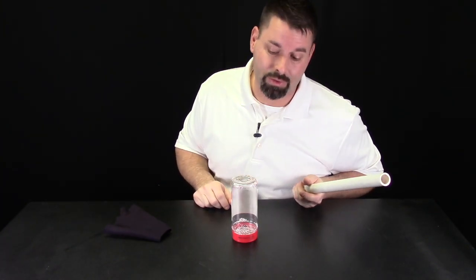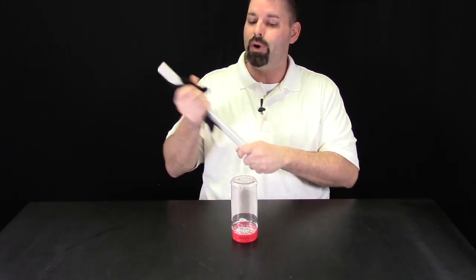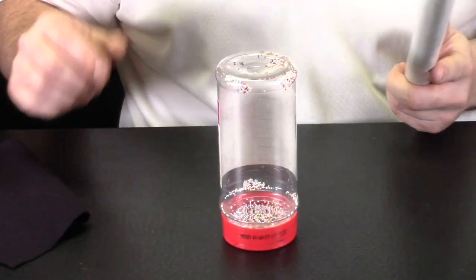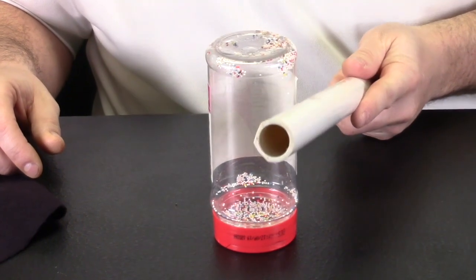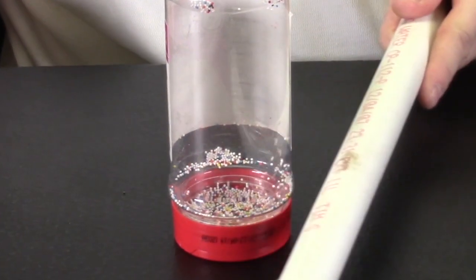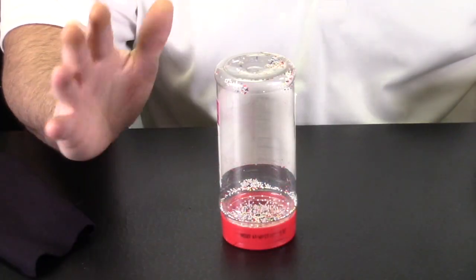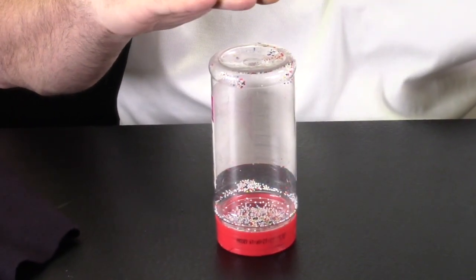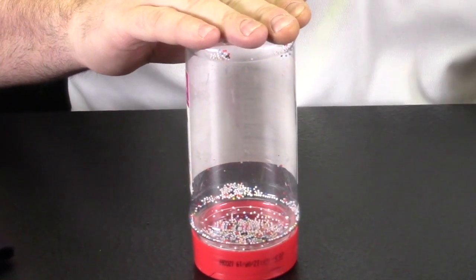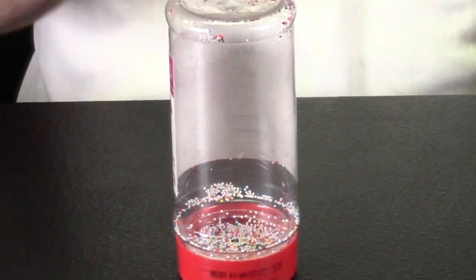You can even watch these sprinkles move as I take the charged pipe and put it next to the sprinkles. We've zoomed in. Watch what happens. You can see the sprinkles are reacting to the charge. Believe it or not, there's even a charge in my hand. Watch what happens with the sprinkles when I touch the container. A couple of them were repelled.